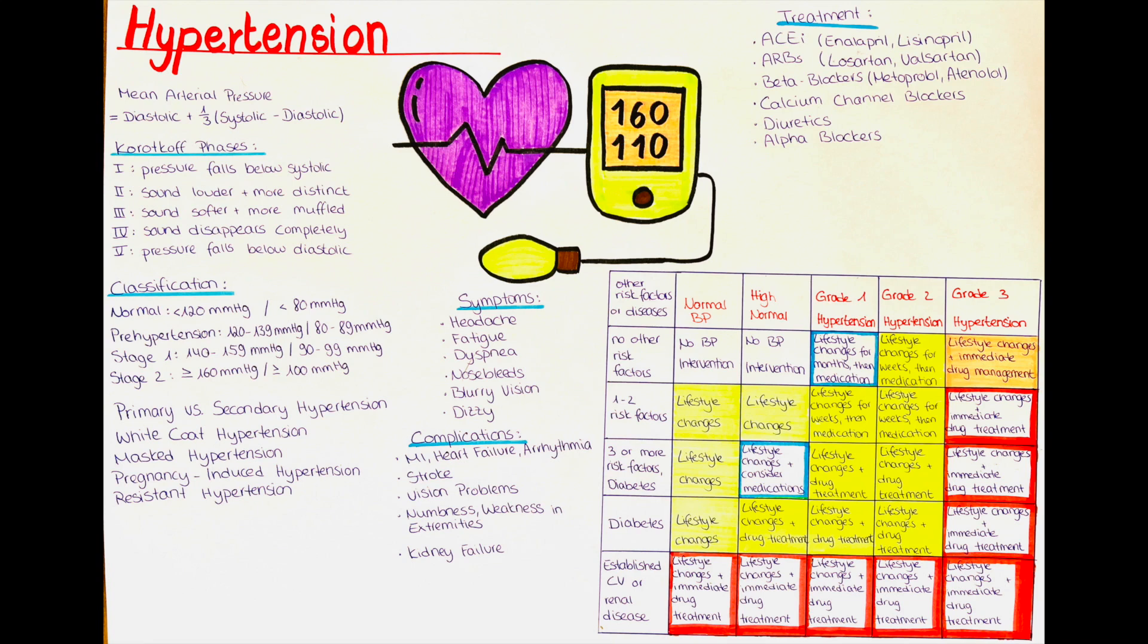Secondary hypertension is a type of hypertension that is caused by an underlying medical condition, such as kidney disease, endocrine disorders or medications. There are a few other types of hypertension that we should be aware of. A commonly seen type of hypertension is the white coat hypertension. This type of hypertension occurs when the patient's blood pressure is high only when they are at the doctor's office. This is usually caused by the patient being nervous to be at the doctor's office.